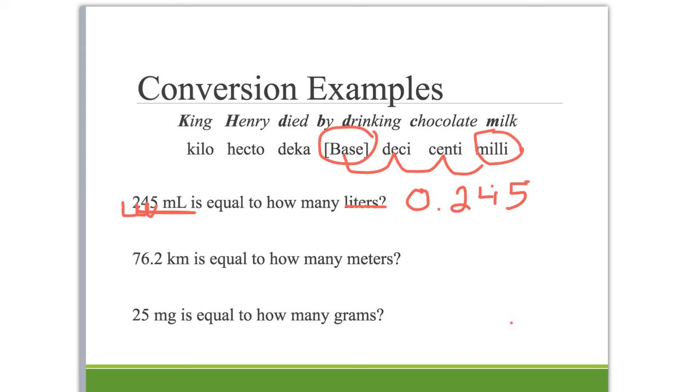How about another problem? We've got 76.2 kilometers equal to how many meters. We are starting at kilometers and going down to meters, which is your base spot. So we count the number of prefixes we have to go through: one, two, three. We're moving to the right this time, so our decimal point, which right now is between the six and the two, has to move to the right one, two, three spots. We've got to put zeros in those two spots, so that would be 76,200 meters.